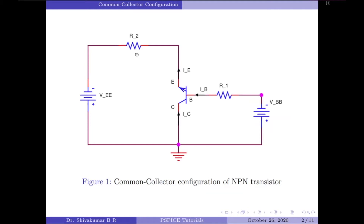This type of configuration is commonly known as a voltage follower or emitter follower circuit. The common collector configuration is very useful for impedance matching applications because of its very high input impedance in the region of hundreds of thousands of ohms, while having a relatively low output impedance. In this configuration the load resistance is connected in series with the emitter terminal.